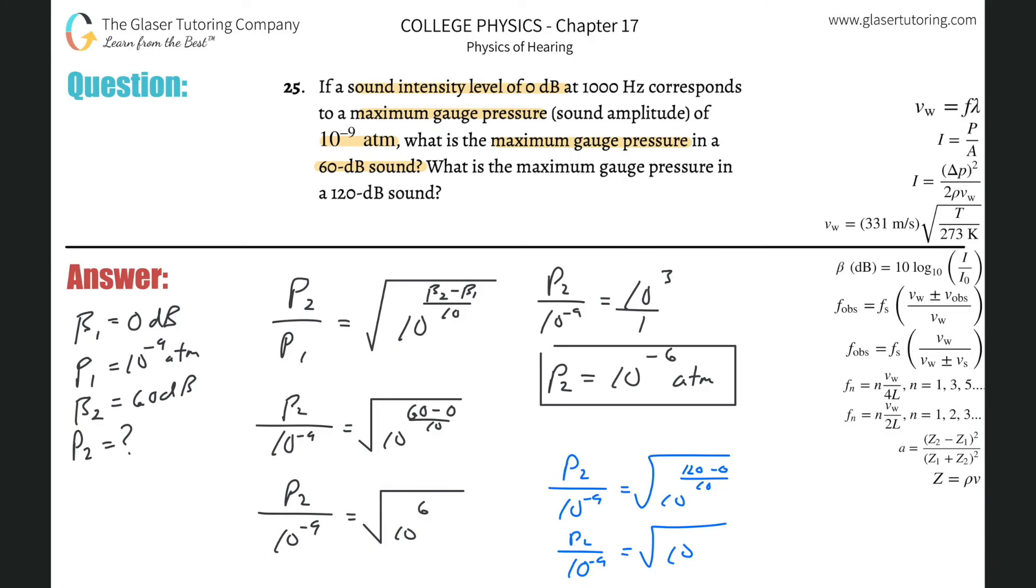We're going to get p2 all over 10 to the minus 9, that's going to be square root of 10 to the 12th, so that's really going to be 10 to the 6th after you take the square root. When you add those exponents together, when you do your cross multiplication, p2 will then be equal to 10 to the minus 3, and voila, that's in atmospheres.